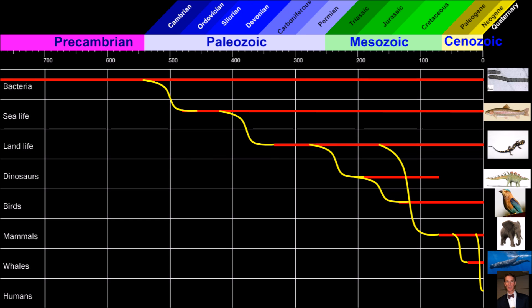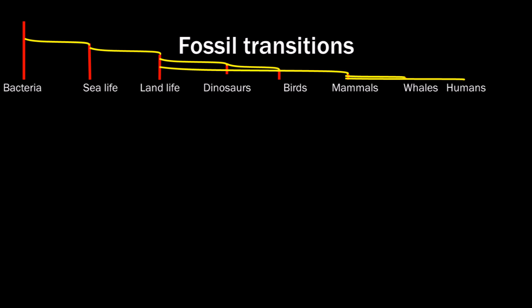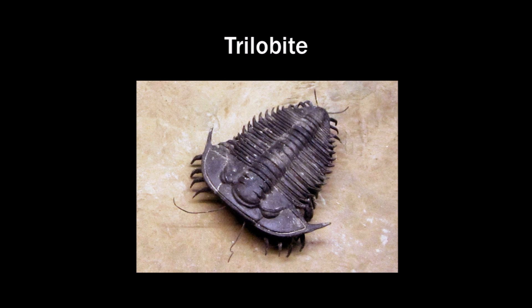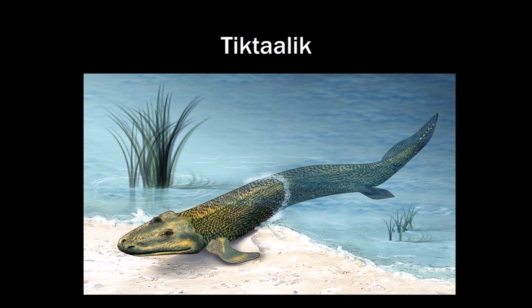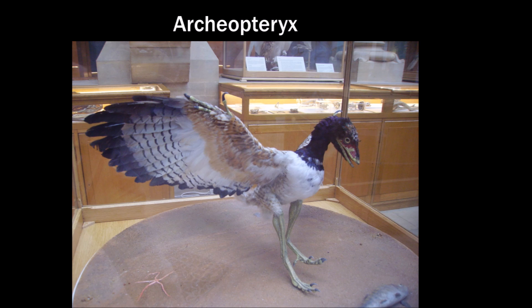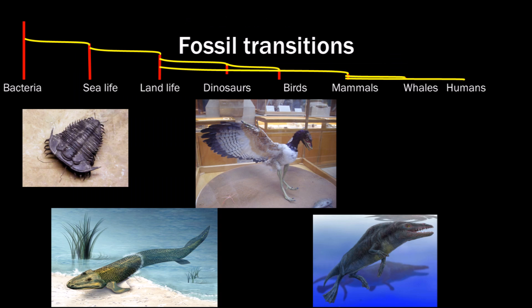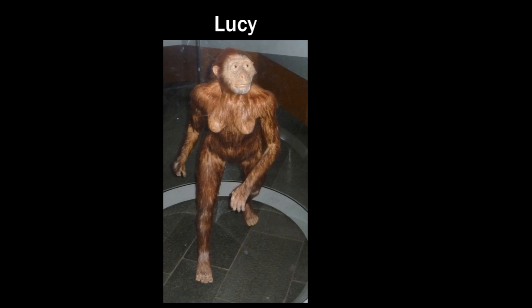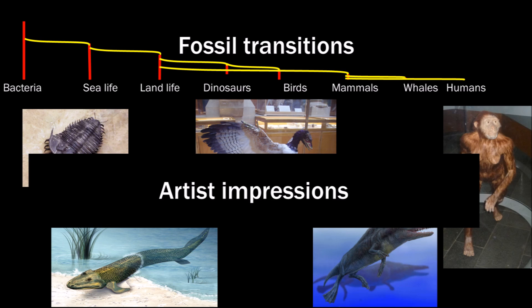All these new groups should have had transitions from one distinct group to the other. Those are said to be found in the fossil record. We are going to show the most important and famous transitions here: the trilobite as one of the first complex life forms; Tiktaalik as the transition from fish to tetrapods; Archaeopteryx as the dinosaur-to-bird transition; Rhodocetus as the transition to whales; and finally, Lucy as the shared ancestor of apes and humans. Note that these are all artist impressions.